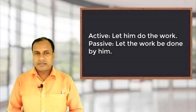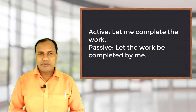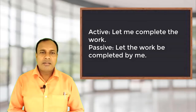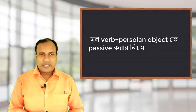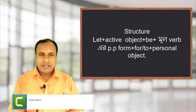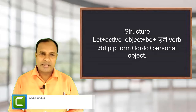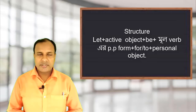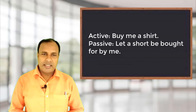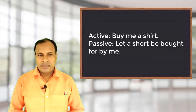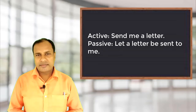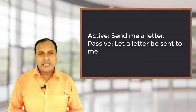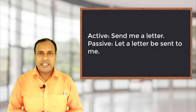Another structure is when the main verb has a personal object. The structure becomes: Let plus active object plus 'be' plus main verb past participle form plus 'for/to' plus personal object. For example: 'Buy me a shirt.' Passive becomes: 'Let a shirt be brought for me.' Another example: 'Send me a letter.' Passive becomes: 'Let a letter be sent to me.' In these two examples, we see that 'for' or 'to' is used instead of 'by'.